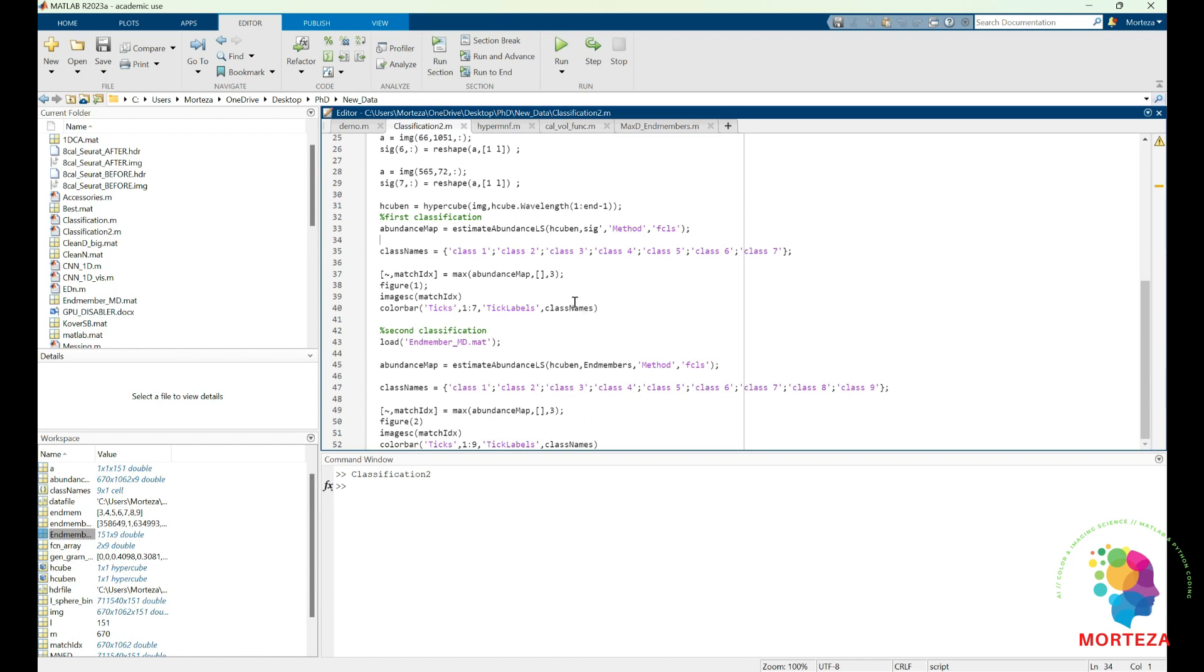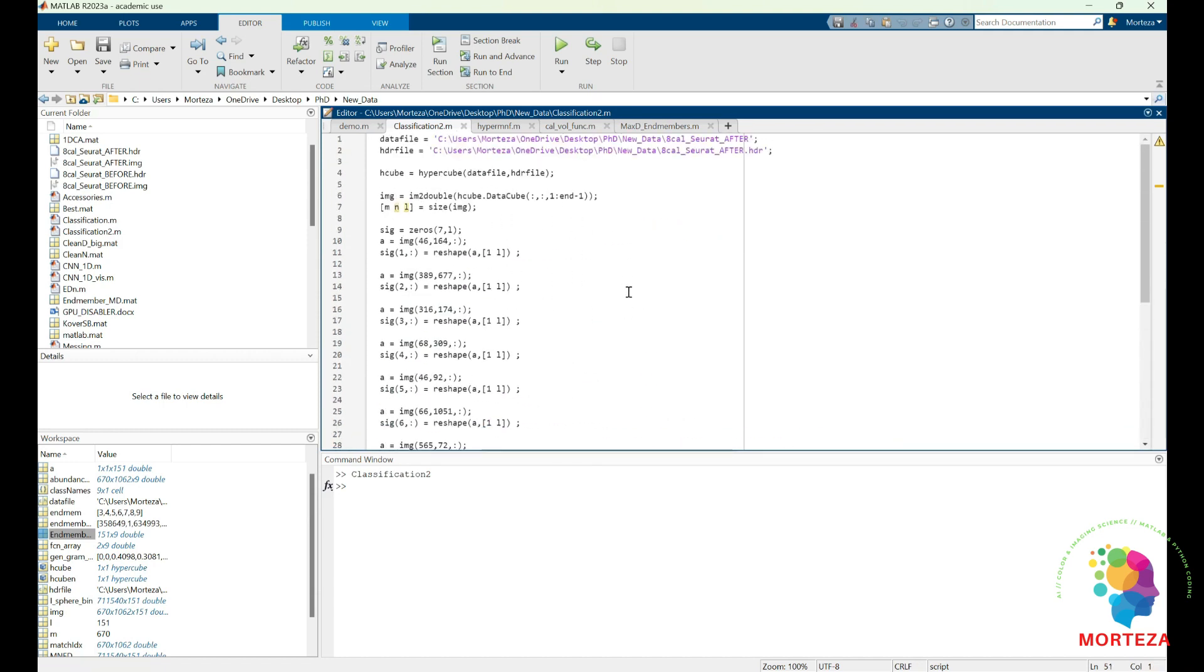So again, as I said, you could find the code using a link in the description section. I'm going to also include this code, and it's very easy to do the classification once you have the endmembers. You just have to load them and then estimate abundance and then the class names, and then use max to specify which class each pixel belongs to. And then we just plot the output of max, and then we use colorbar to show the classification map. And I have already talked about this in one of the former videos in which I have talked about how we could classify hyperspectral images in MATLAB. And that's about it.